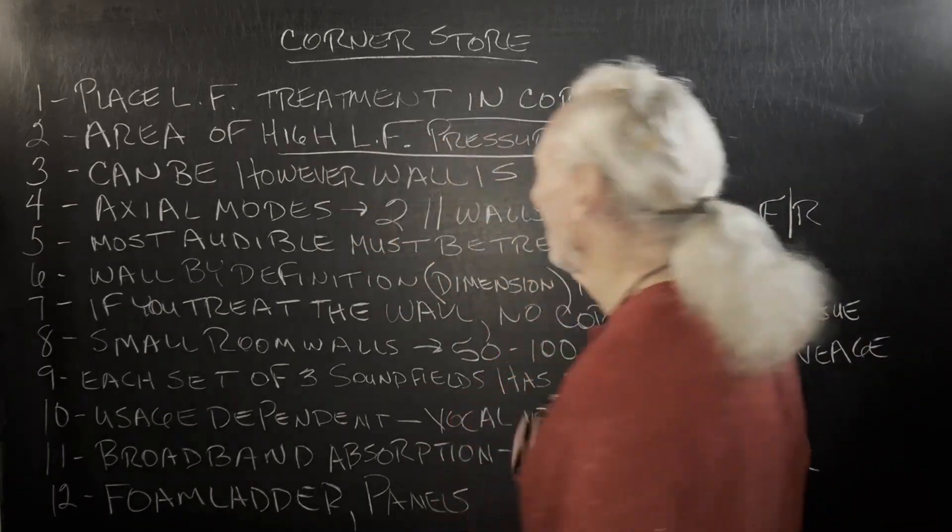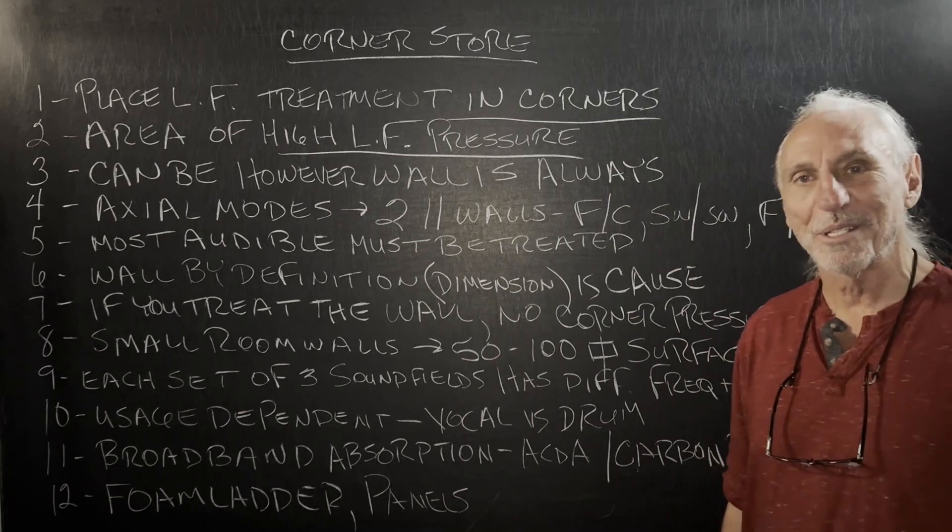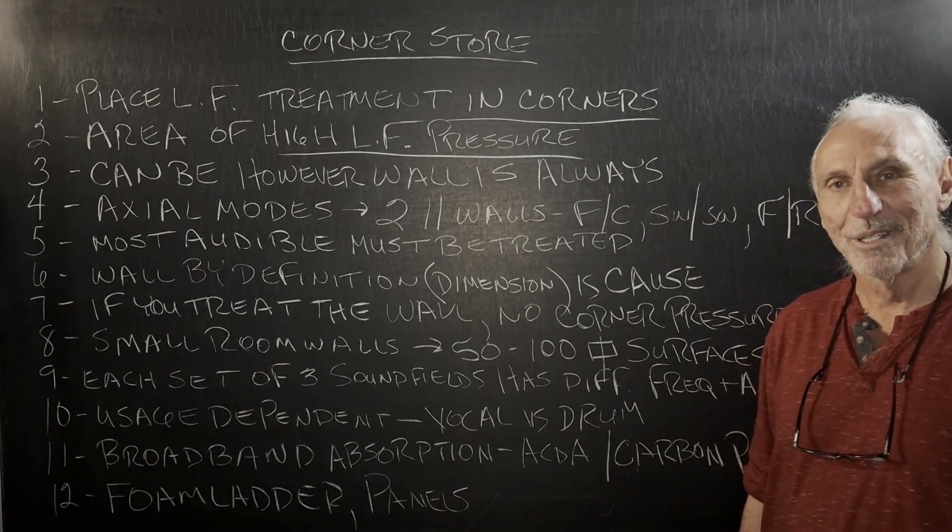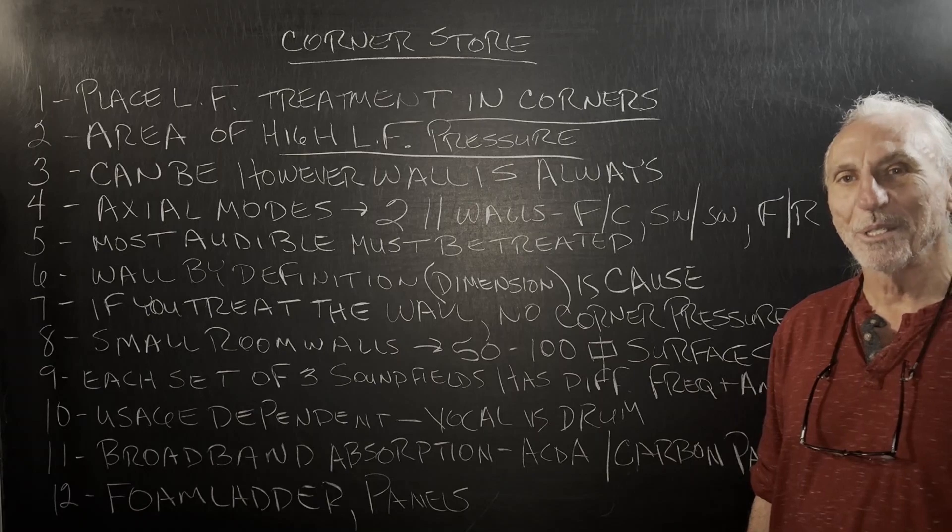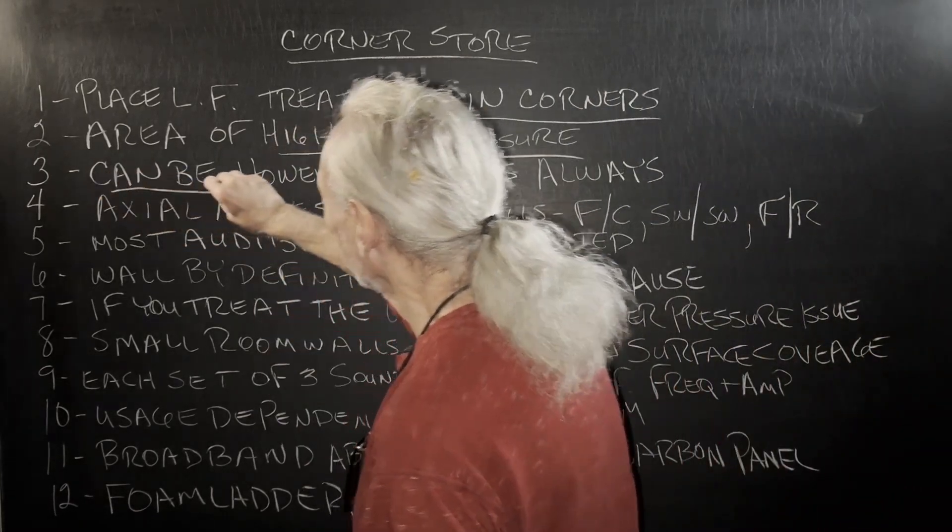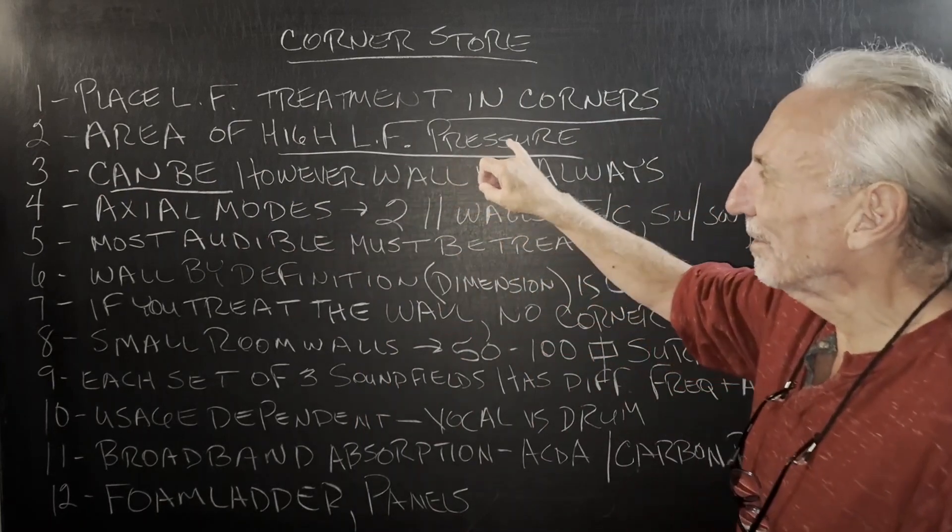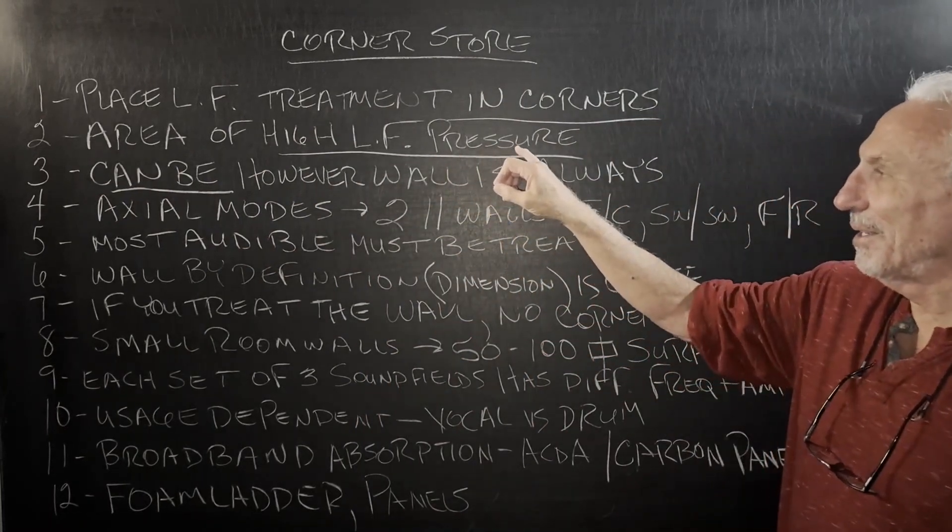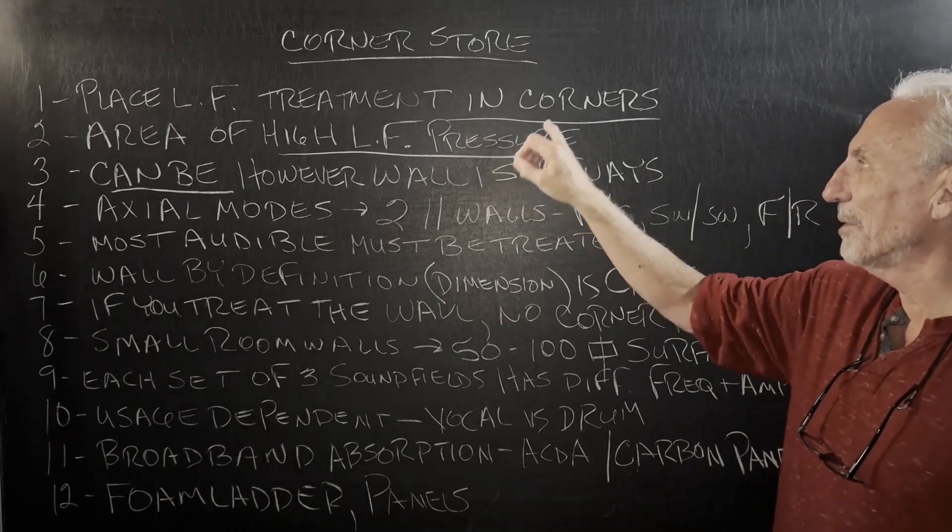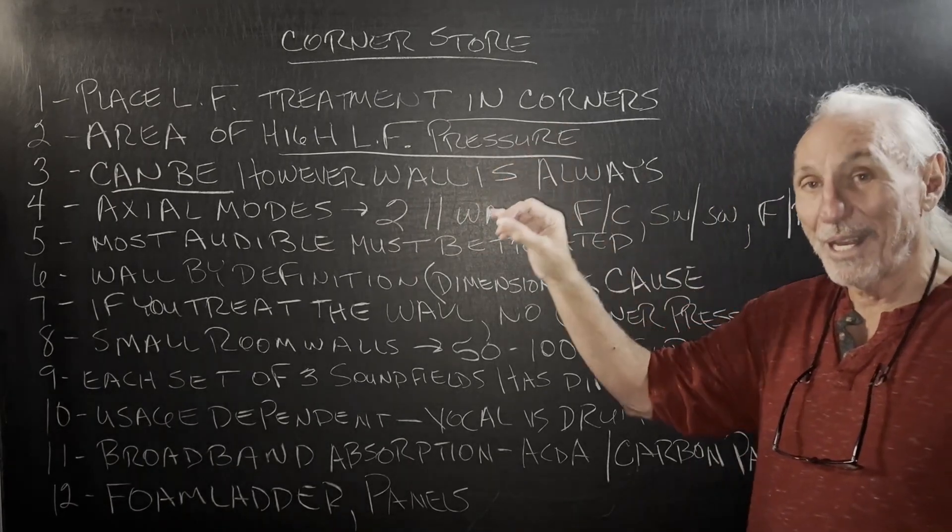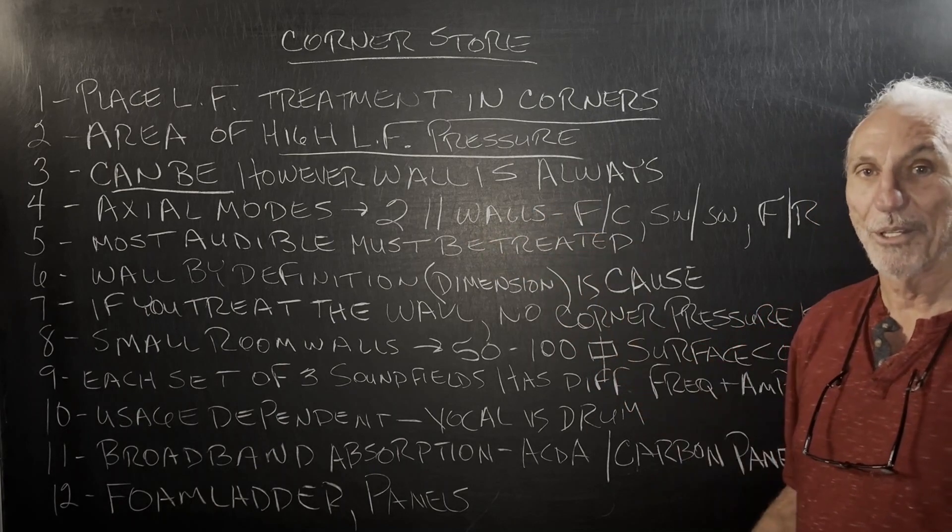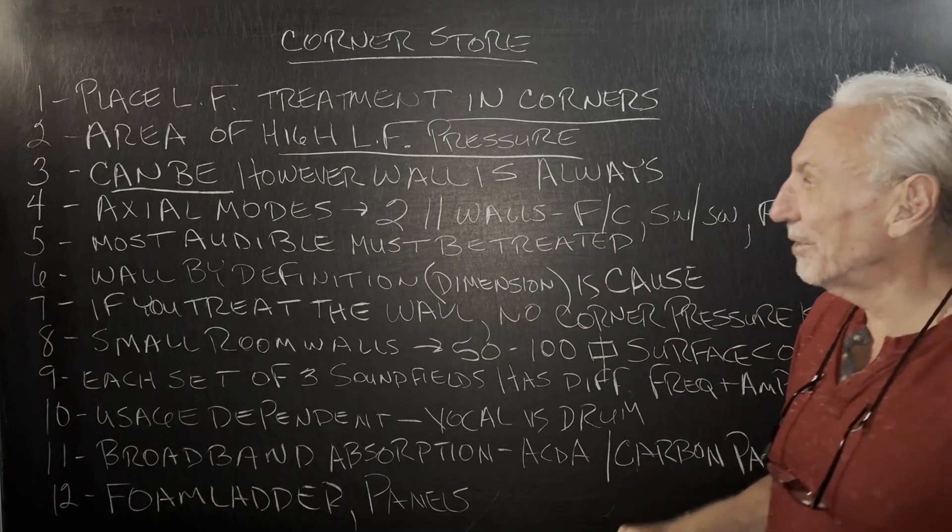So it is an area of low frequency pressure. That's what they tell us, but so is the wall. The wall is producing the problem. Area of high frequency pressure in the corners of the room. That can be true, but it's mostly middle and high frequency pressure, but the wall has greater pressure. So that's what we have to understand.